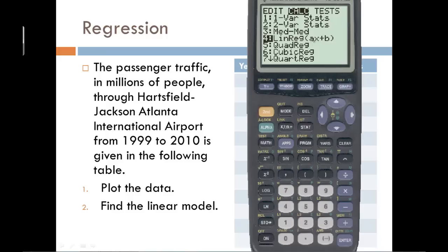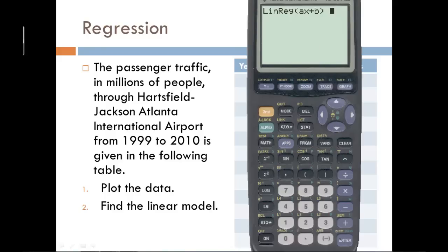In this case, the A will represent our slope, and the B will represent the Y-intercept. So select number four, and it will put this command, linreg parentheses AX plus B, at the top of your screen. This is the linear regression.